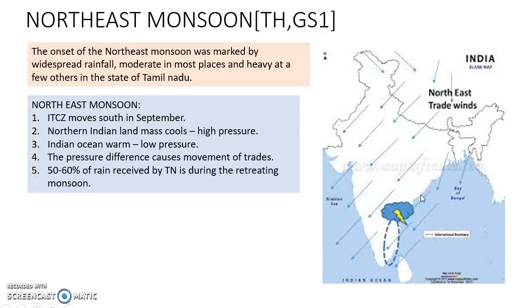It is reported that 50 to 60% of rainfall of Tamil Nadu is received during this period, as Tamil Nadu is in the rain shadow region during the South West Monsoon.